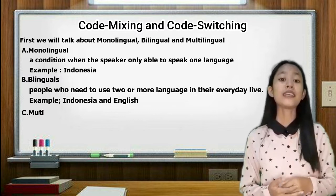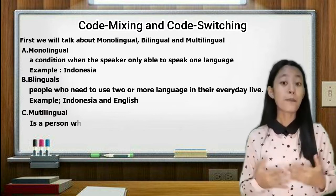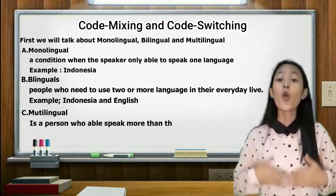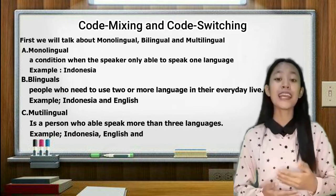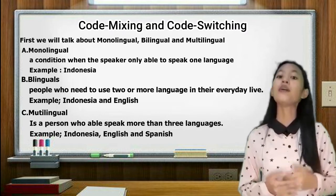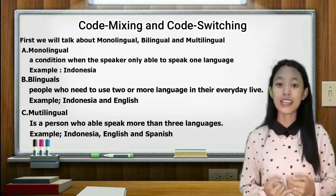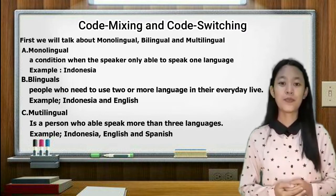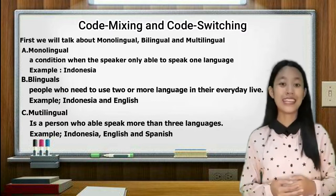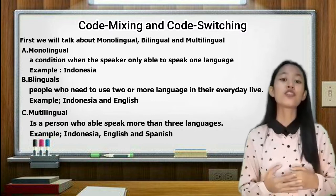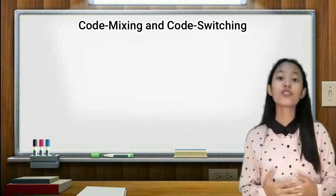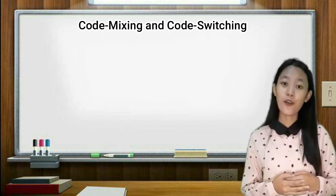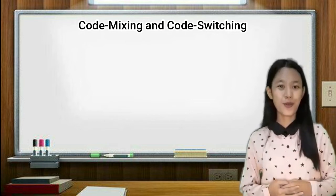And the third one is multilingual. Multilingual is a condition when a speaker or people use three or more languages in their daily life. For example, Indonesian language, English language, and Spanish language. And there are so many languages. So in sociolinguistics, multilingual will use language choice that code or namely code.